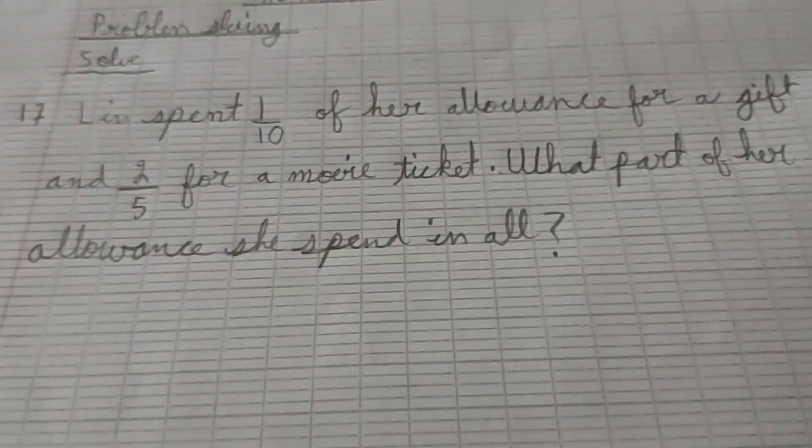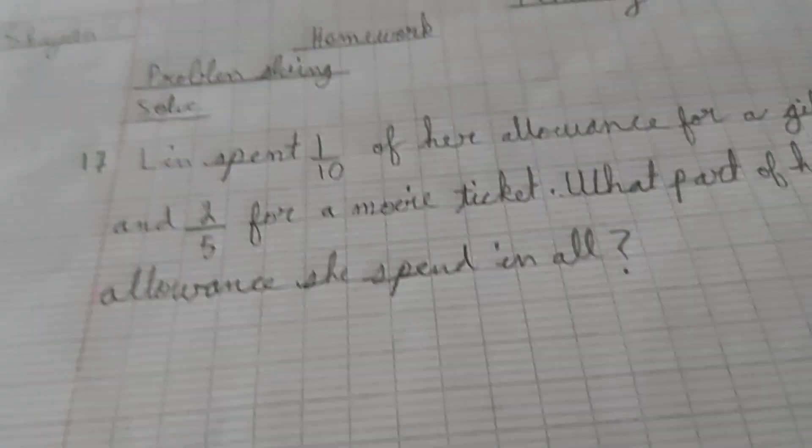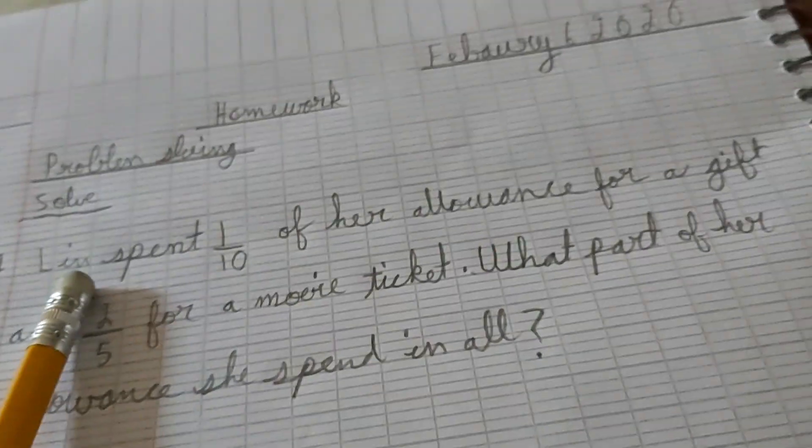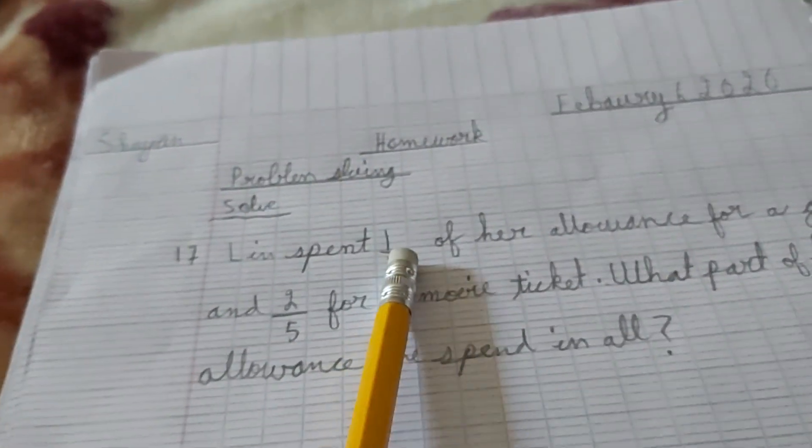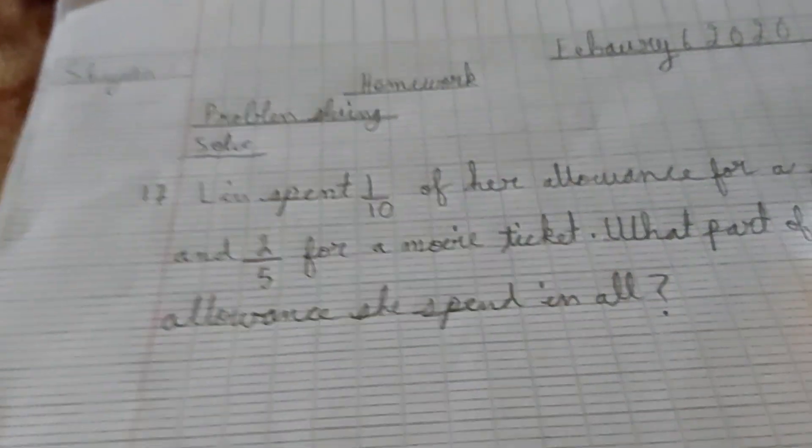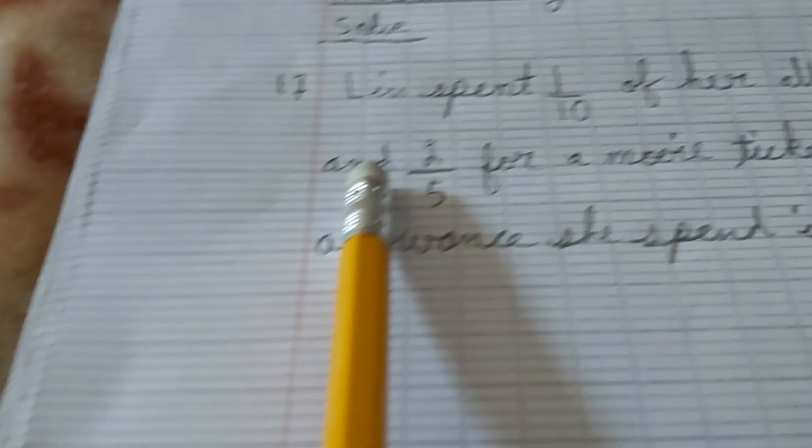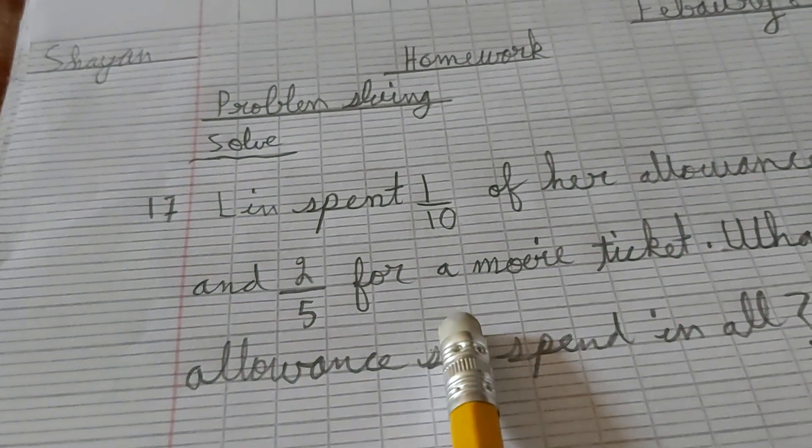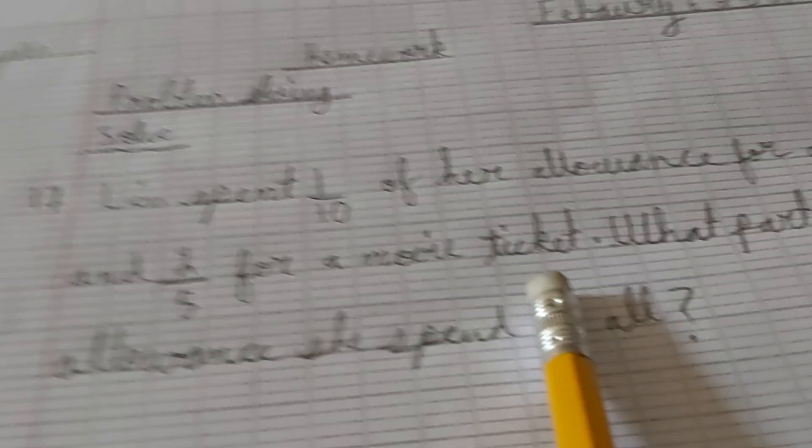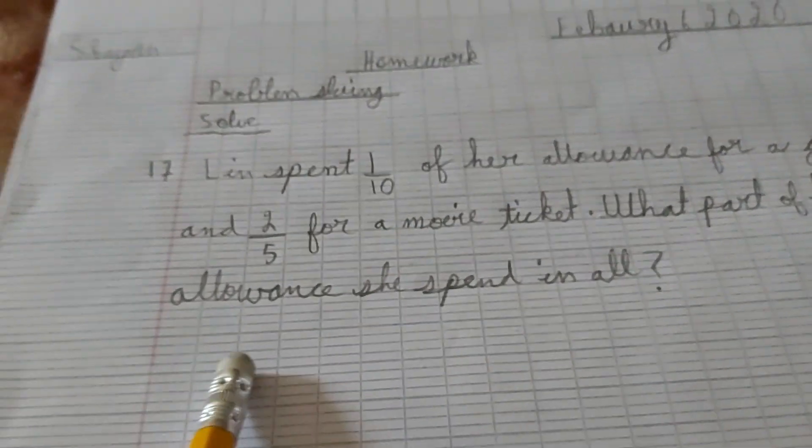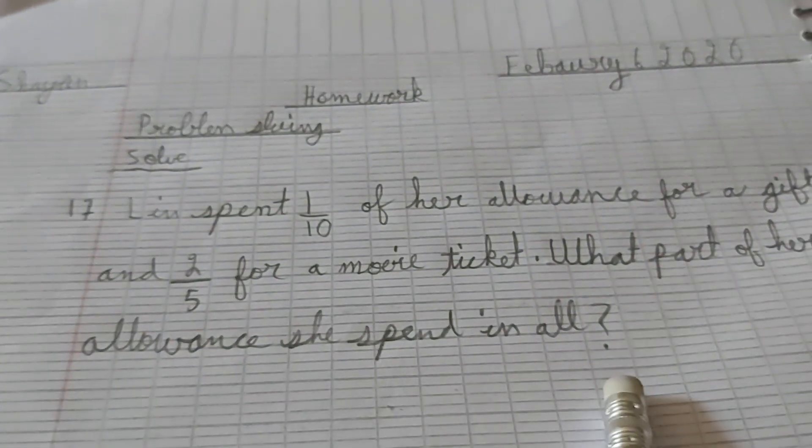Okay, here is math and I will read for you. Lynn spends 1 over 10 of her allowance for a gift and 2 over 5 for a movie ticket. What part of her allowance did she spend in all?